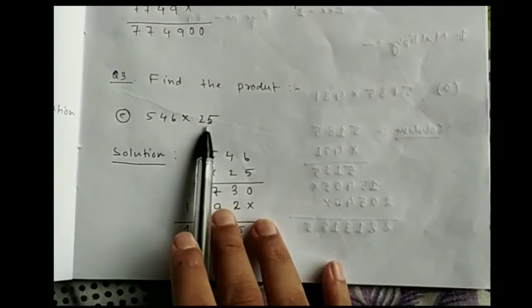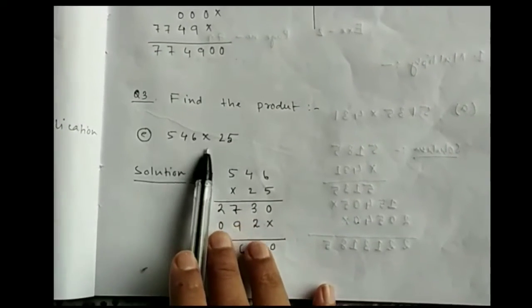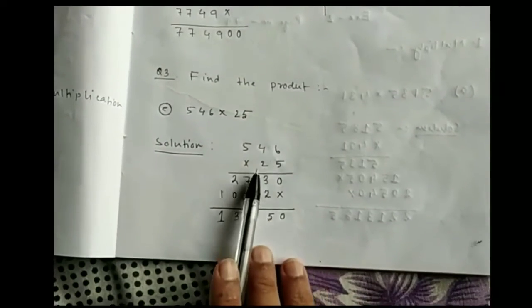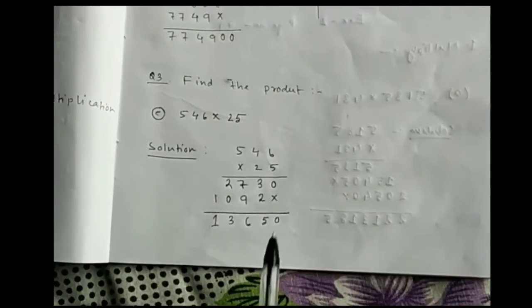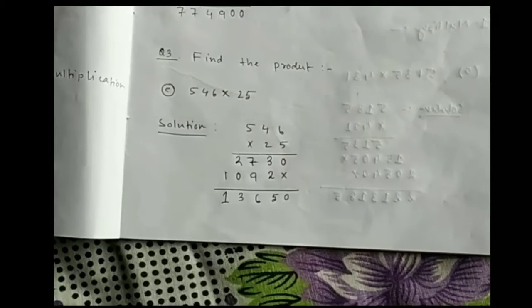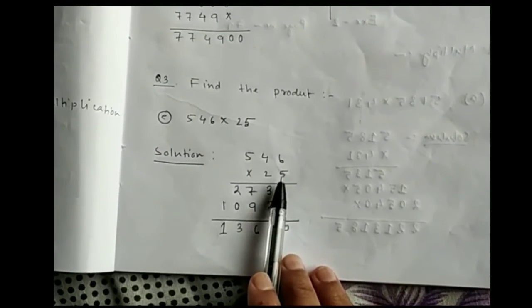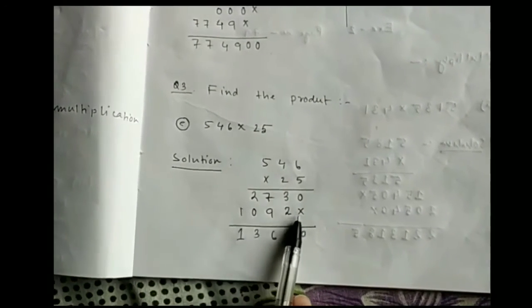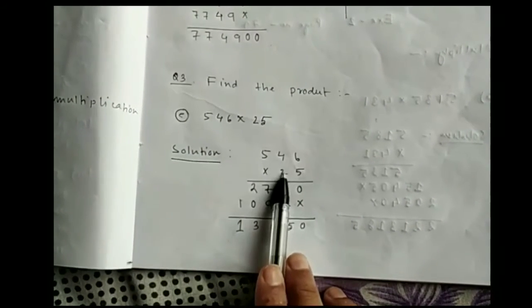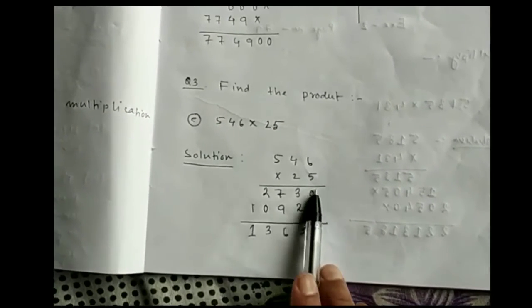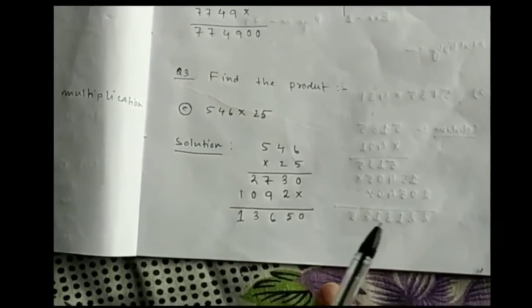Question 3: find the product of 546 into 25. Since no number has a zero on the rightmost side, this question has only one solution — Method 1. We do normal multiplication: first multiply all digits by 5, put a cross sign in the ones place, then multiply all digits by 2, and finally add all the results together.